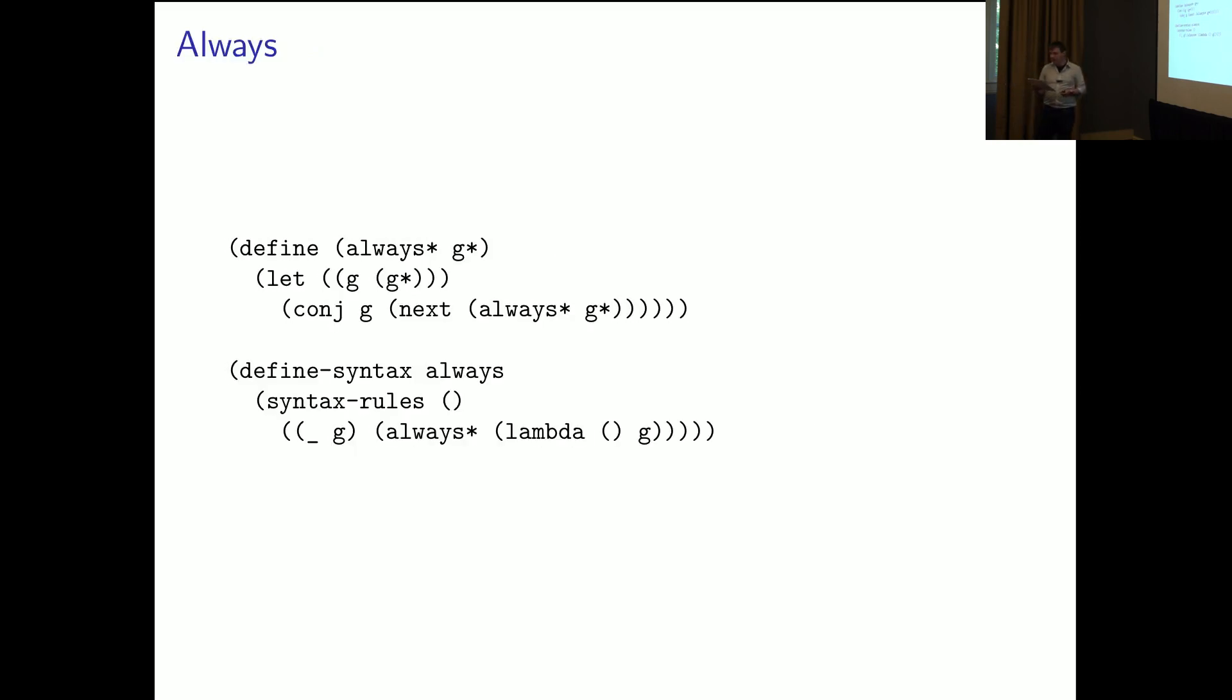The always operator shows one of the pitfalls of naively mapping temporal logic to relational programming. The first impulse was to define it kind of like we did until, but some experimentation shows that this is problematic. Always will return a promise so long as the goal it encloses holds and the empty stream as soon as it fails. And that's useful for programs that want to verify whether a state still holds, but always will never construct a mature stream of solutions, since clearly the goal will never have been true forever, at least not in linear time.